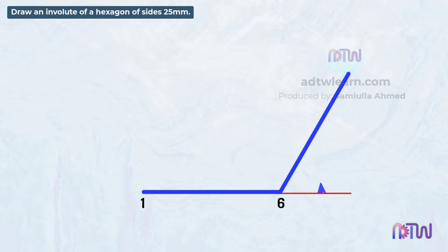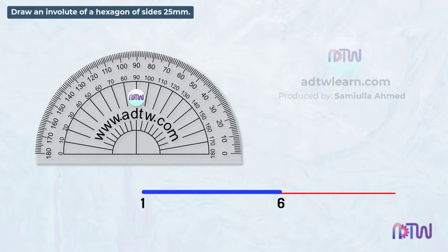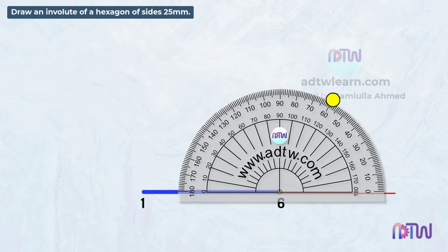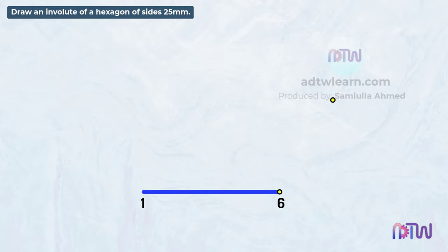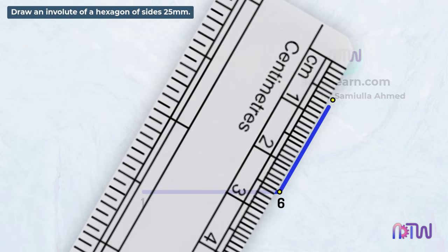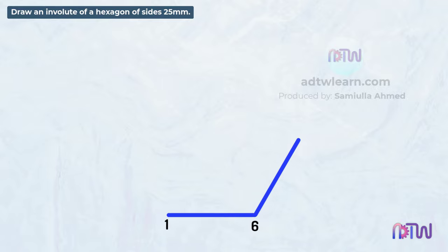Next, we need to draw a line having a 60 degree inclination and 25 millimeters length. Keep the protractor here — like this — and mark 60 degrees from this line. Using this point as a reference, draw a line of 25 millimeters in length. Similarly, draw the other sides.